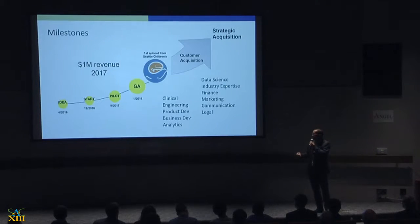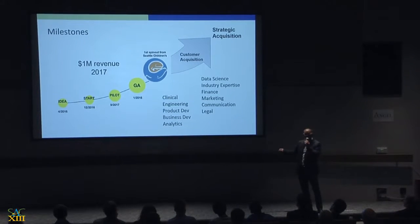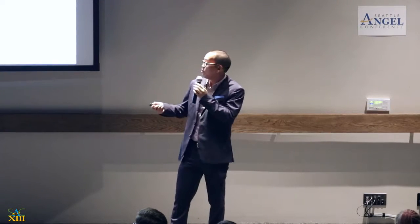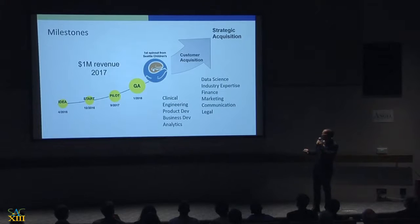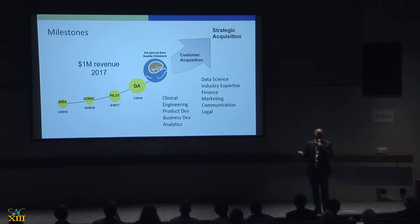Can our team deliver? Let me show you what we did. We had an idea back in April 2016. By Christmas 2016 we started writing code. Over 12 months we went from pilot MVP to general availability — that's phenomenally fast for any software company. We got spun out by Children's; it's the first time they've ever spun out a company. We've been adding talent to the team: business development, engineering, finance, marketing, and legal.